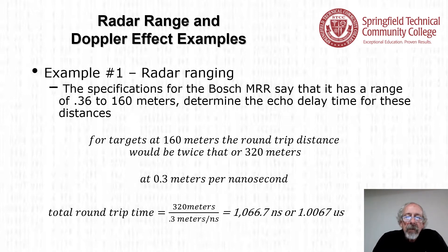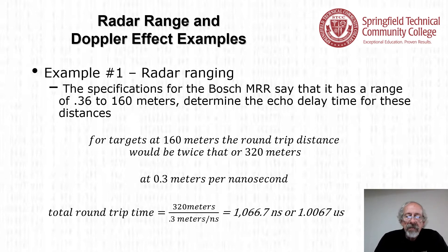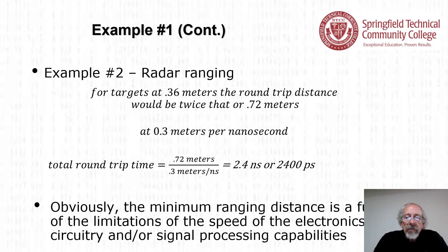For the Bosch medium range radar with a range of 0.36 to 160 meters, the round trip echo delay time for 160 meters is approximately 1,066.7 nanoseconds or 1.0067 microseconds. For the 0.36 meter distance, the round trip time is in the order of 2,400 picoseconds. The minimum ranging distance is a function of the speed limitations of the electronic circuitry and signal processing capabilities.